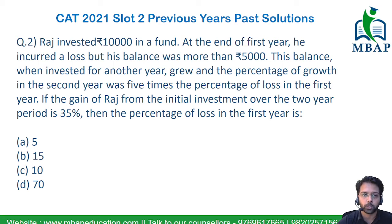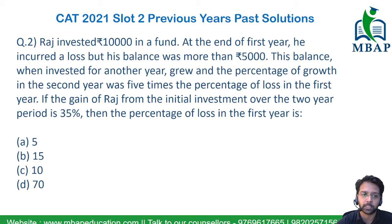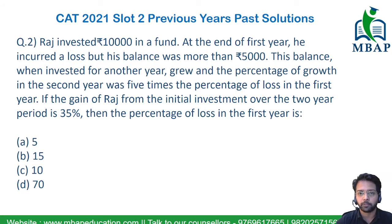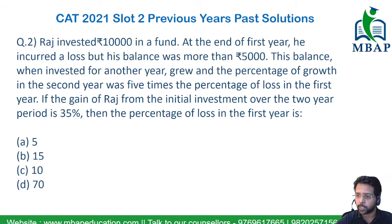So in the first year he incurred a loss, and next year he gained 5 times the magnitude of the loss from the first year. If the gain of Raj from the initial investment over the two years is 35%, then what is the percentage of loss in the first year?